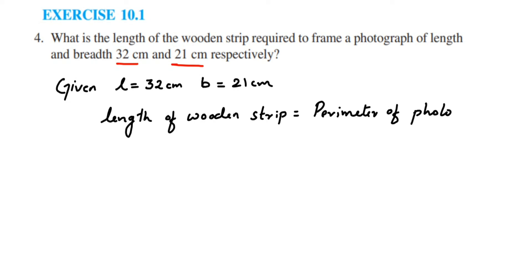The formula for perimeter of the photograph is 2 times l plus b. We know length and breadth from the question, so this is 2 times 32 plus 21.